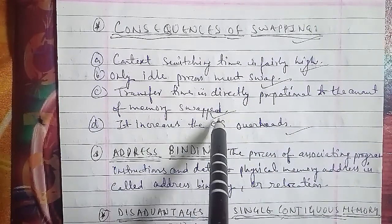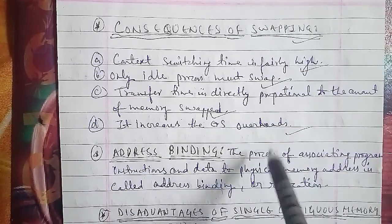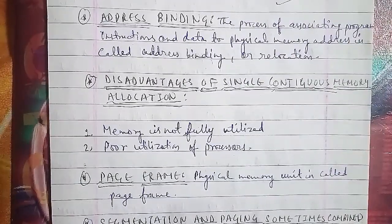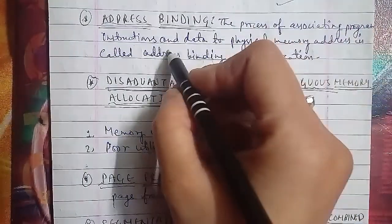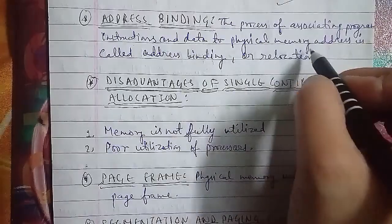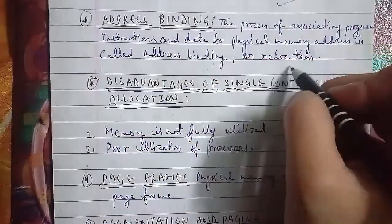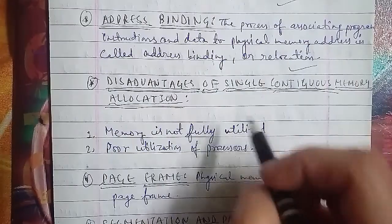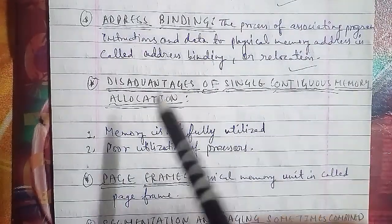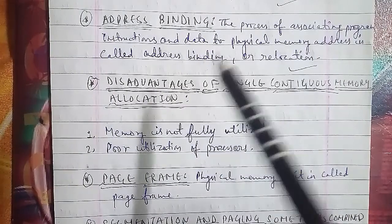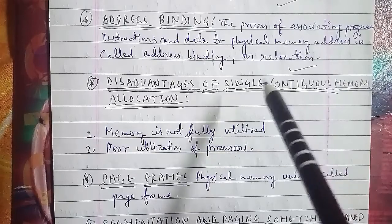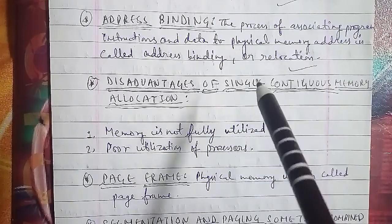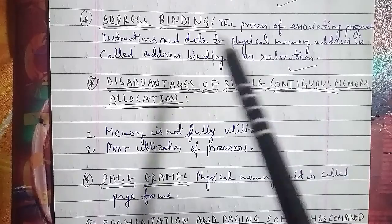Address binding: address binding is the process of associating program instructions and data to physical memory addresses. This is called address binding or relocation. If asked about address binding or relocation, define it as the process of associating program instructions and data to physical memory addresses.